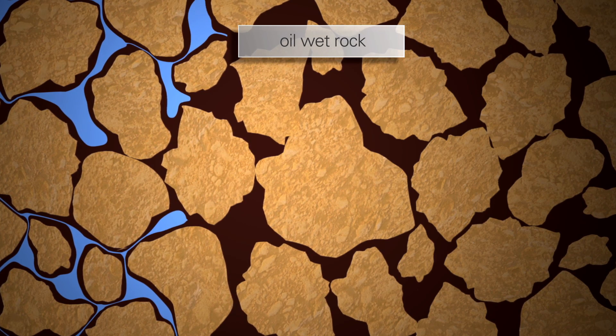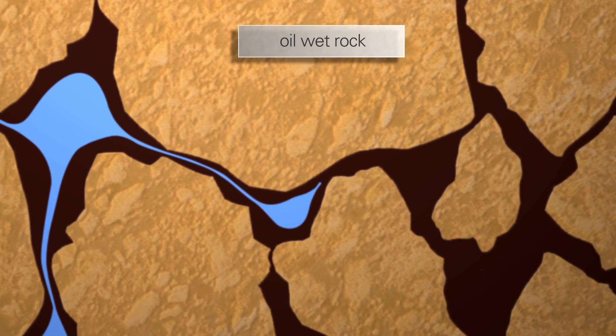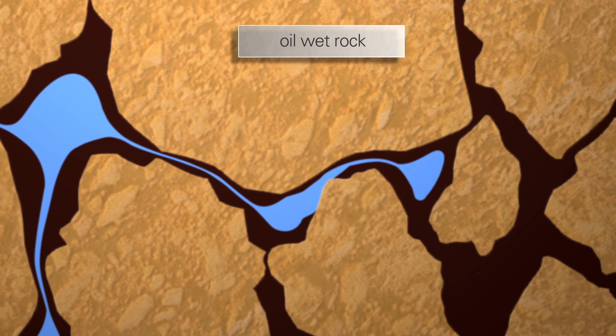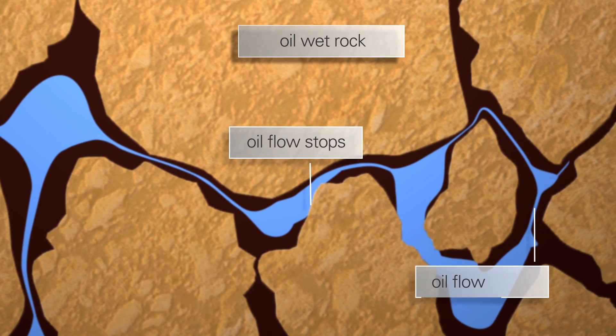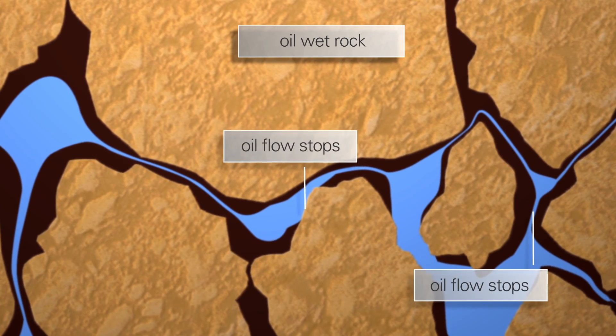When water is injected, it flows through the middle of the pores and the oil flows over the rock surface. The film gets thinner as the oil is produced until it finally breaks and oil flow stops.